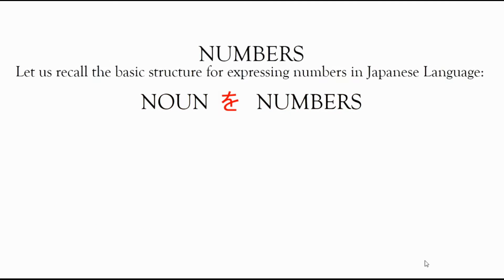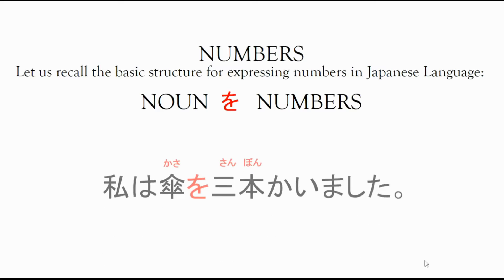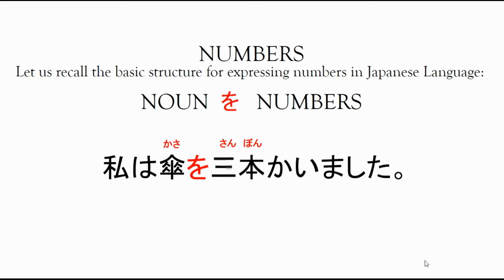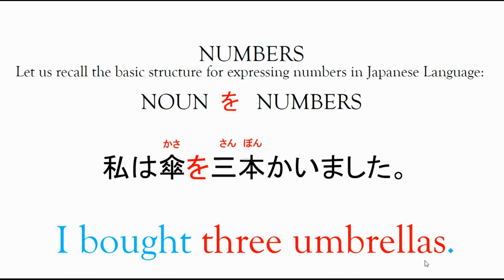For noun o numbers, for example: watashi wa kasa o sanbon kaimashita. This means I bought three umbrellas. The noun here is kasa, and the number is sanbon — that's the counter we use for long things.